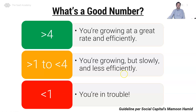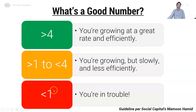Is 4.2 good or bad? In the green, greater than 4 is considered great — you're growing at a great rate and efficiently. In the orange in the middle, you're growing but slowly and maybe not as efficiently. And less than one, you're in trouble, or you'll eventually be in trouble if you sustain your business with a SaaS quick ratio below one.